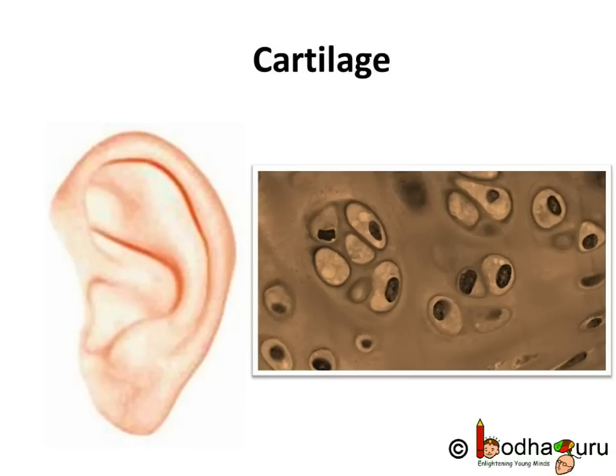Touch your ear — it's hard but flexible, unlike bones. This is cartilage, another kind of connective tissue which has widely spaced cells. Cartilage has a solid matrix made of protein and sugar, so it is solid but flexible. Cartilage also smoothens bone surfaces at the joints. Apart from ears, cartilage is also present in the nose, trachea, and larynx.